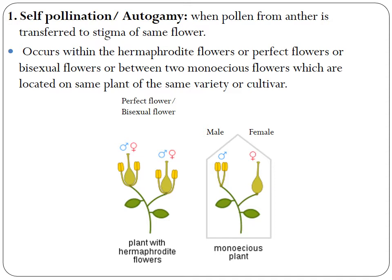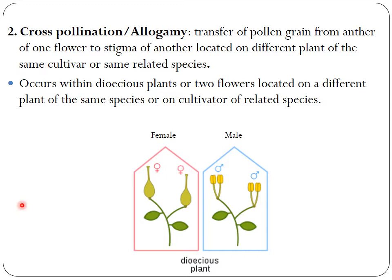Cross-pollination or allogamy is the transfer of pollen grain from the anther of one flower to the stigma of another flower located on a different plant of the same cultivar or related species. This can occur in dioecious plants, where female flowers are borne on one plant and male flowers on a different plant, or between two flowers of different plants of the same species, such as Golden Delicious and Red Delicious apple varieties.